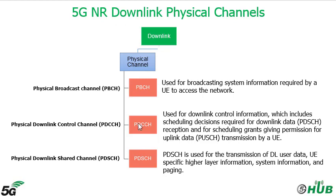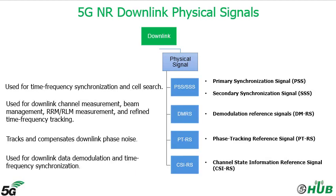Regarding Physical Signals in Downlink, we have four types. PSS and SSS are used in LTE for Time Frequency Synchronization and Cell Search. Also, we have the Demodulation Reference Signal, like 4G, used for Downlink Channel Measurement, Beam Management, and Time Frequency Tracking. Here we have the Phase Tracking Reference Signal to track and compensate downlink phase noise, especially in the spectrum with high frequency like mmWave. And finally, Channel State Information Reference Signal or CSI-RS, used for Downlink Data Demodulation and Time Frequency tracking.